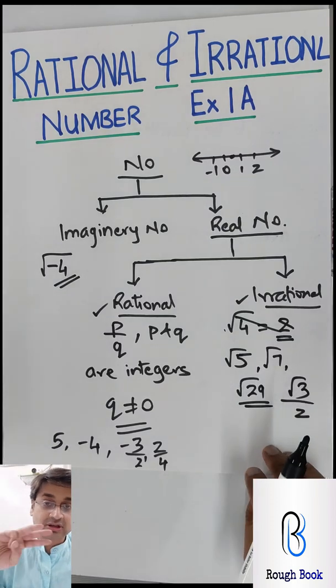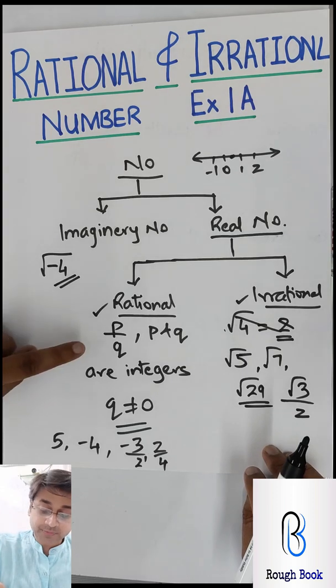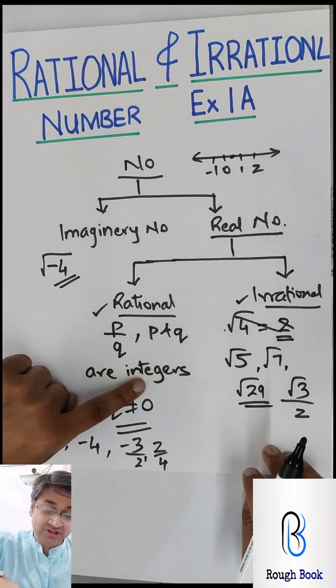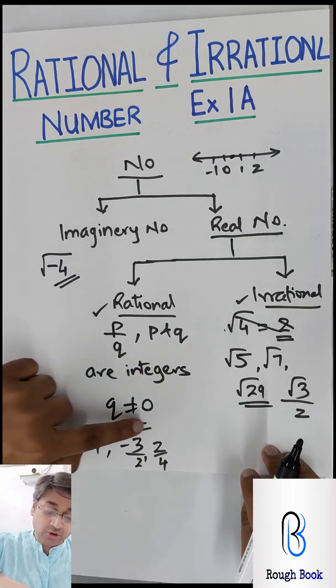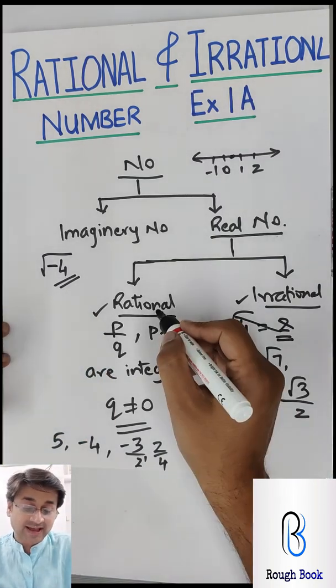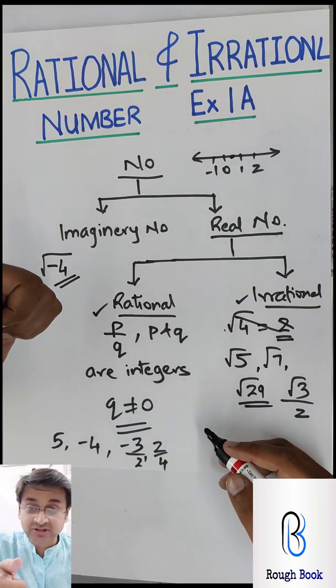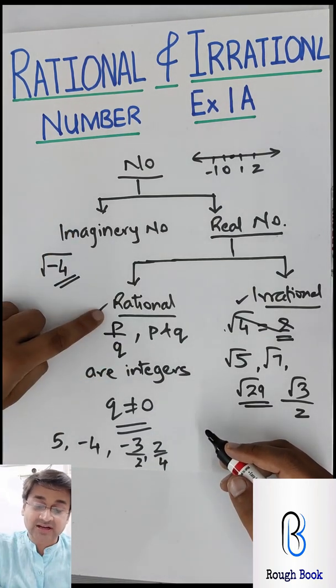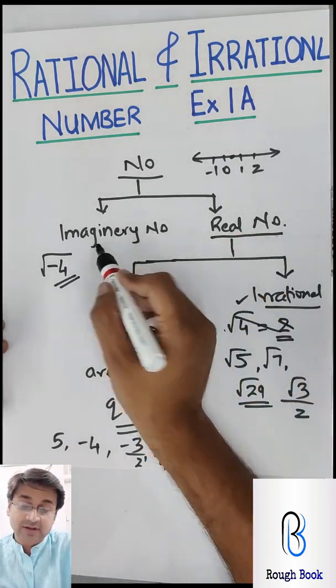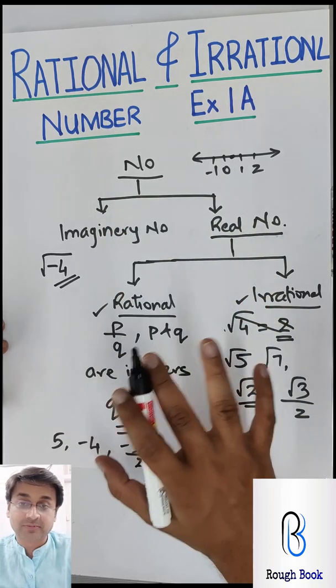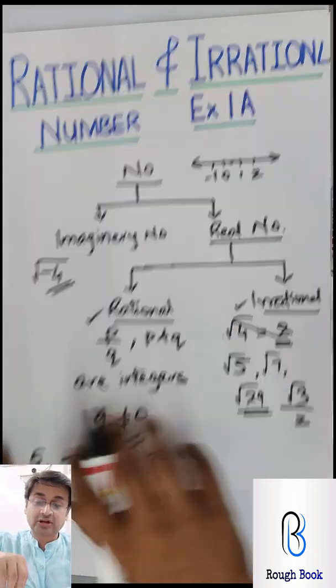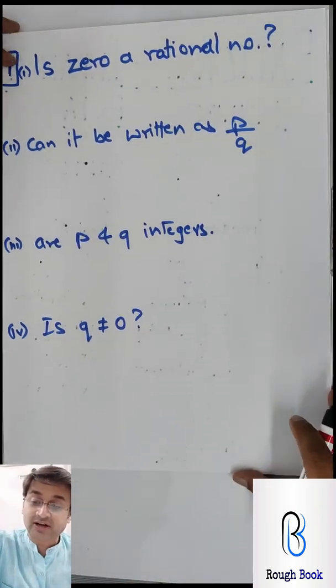Wrong example. Root 5 or root 7 or root 29, all these are irrational, even root 3 by 2 irrational. Why? Because this is not an integer. So three basic rules: Rule number 1, it should be represented as p by q. Rule number 2, both should be integers, and rule number 3, the denominator should not be equal to 0. It can be positive, it can be negative, no problem. So rational numbers further bifurcated as integers, whole numbers, natural numbers - all these are rational and the rest is all irrational. Together form as real. Real and imaginary together form as set of numbers. Now do you understand the entire tree of numbers? So let's work on rational and irrational with exercise 1A with whatever understanding we got.